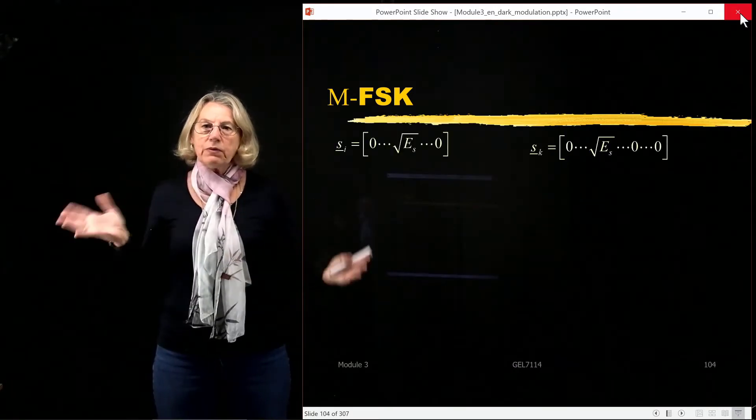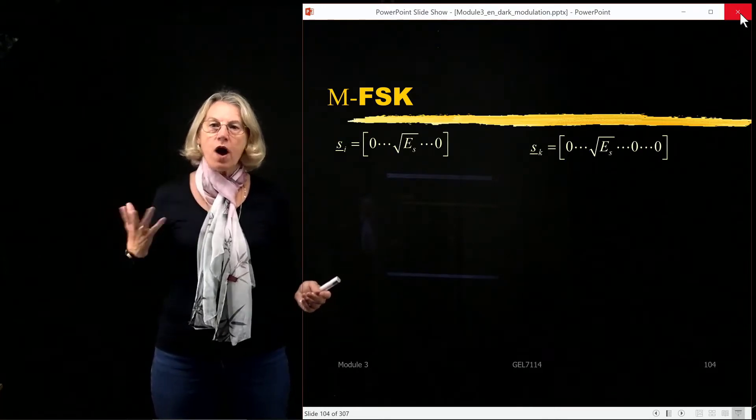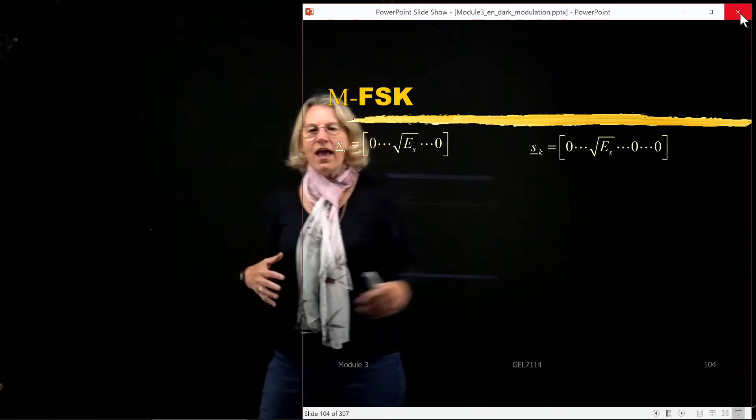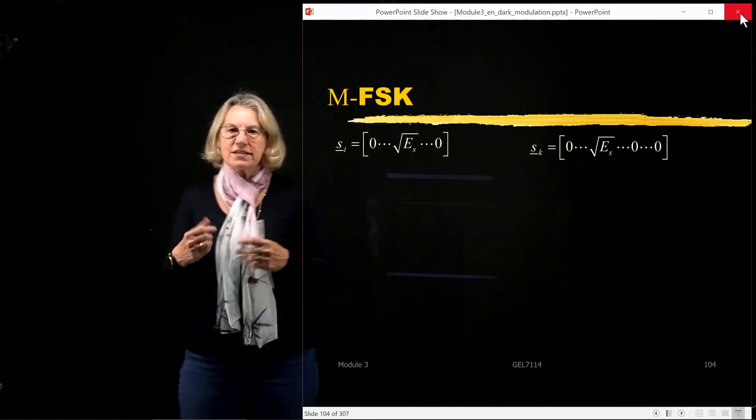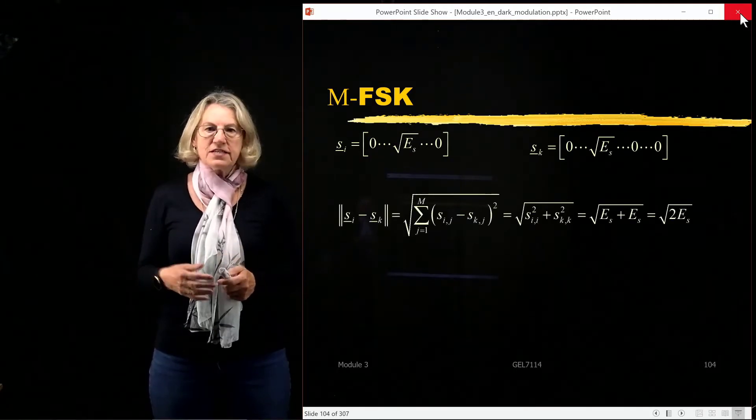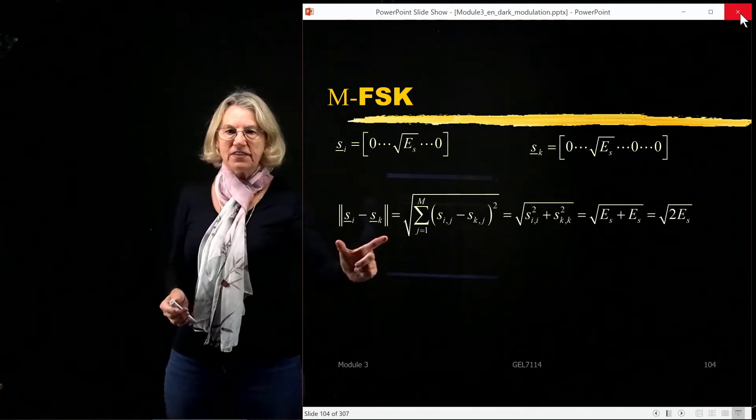So now we would like to look at what is the minimal distance. So I'm going to take two arbitrary symbols, symbol i, symbol k, and see what the distance is between these two. So the distance by definition, here we have the distance between any two symbols,